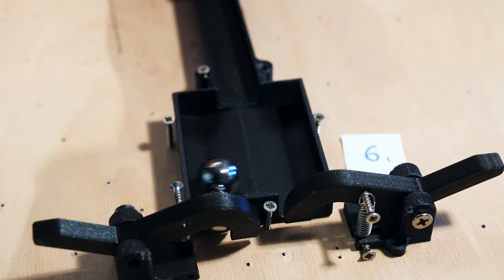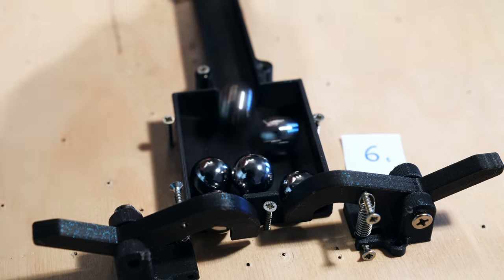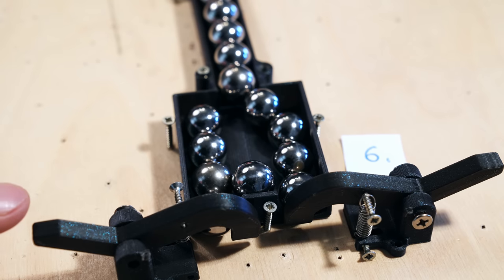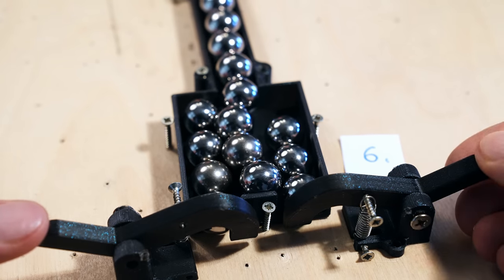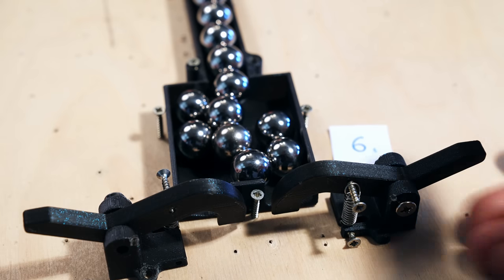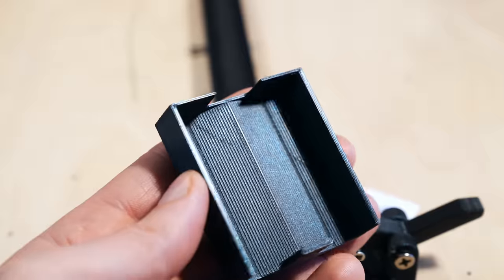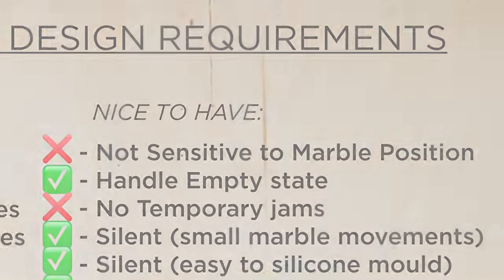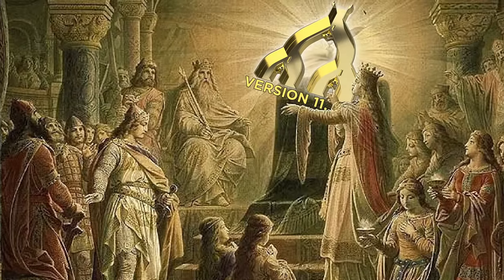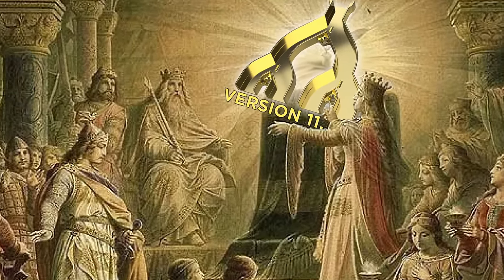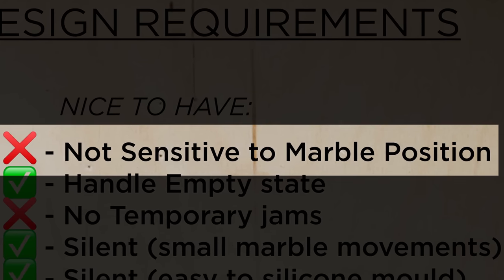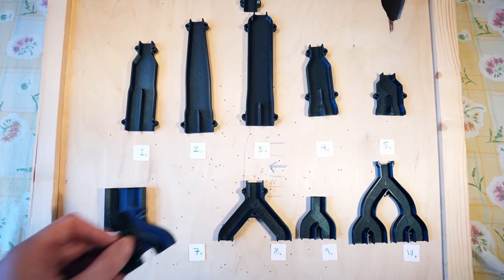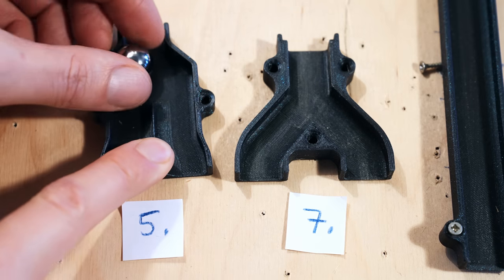Version 6 is a divider on a completely different principle, and it was a long shot — and it missed the goal entirely. It was just jam sessions throughout, and I didn't feel compelled to tweak this design. But perhaps some of you would like to pursue it. If you could design a 2D wide split that is not sensitive to marble position, you've actually found the holy grail of marble dividers. This is the design requirement I tried to solve with version 6, but I couldn't — and I'm just going to accept that I cannot solve it, but perhaps one of you can.